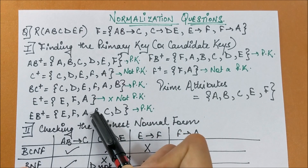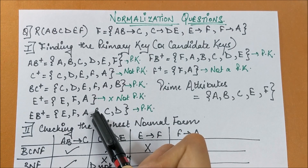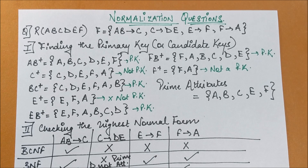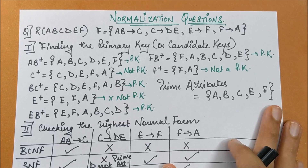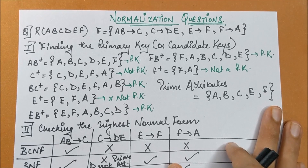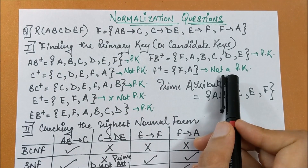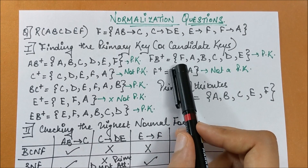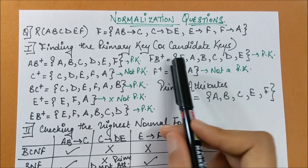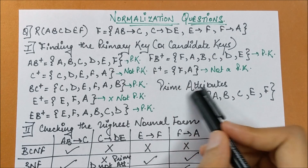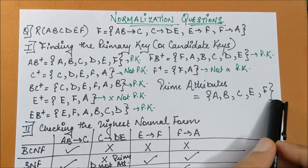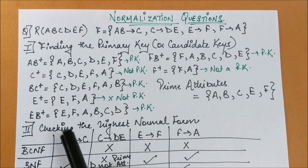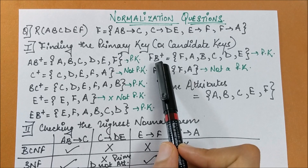The idea is to add attributes that help you reach the primary key. Similarly, for F: its closure alone is not a primary key, but adding B gives FB, which covers all attributes, making FB another candidate key. So the prime attributes are A, B, C, E, and F — only D is a non-prime attribute. The candidate keys are AB, BC, EB, and FB.